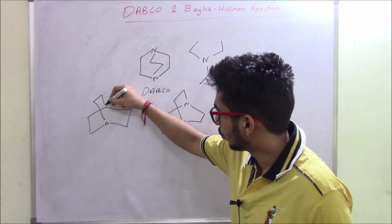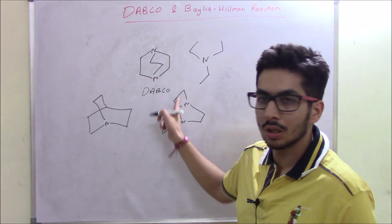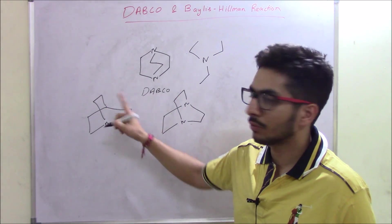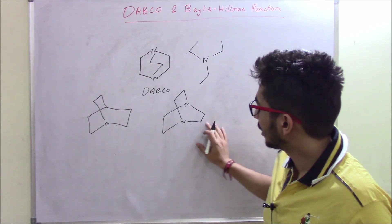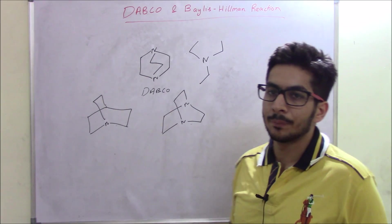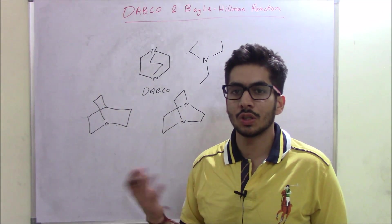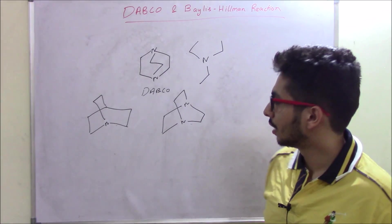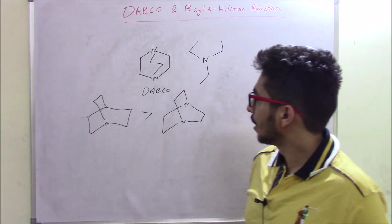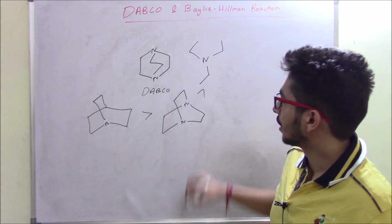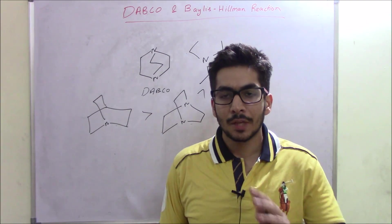The only structural difference between quinuclidine and DABCO is that DABCO has two nitrogens while quinuclidine has only one. If we compare the basicity of these three bases, quinuclidine is the most basic, followed by DABCO, and then triethylamine, which is the least basic compound.